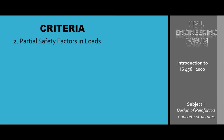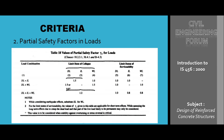Now we'll see the criteria for partial safety factor in load. As given in Indian Standard Code 456:2000, page number 68, Table 18 provides numerous values for load combinations, limit state of collapse, and limit state of serviceability, depending on dead load, live load, and impact load, from which we calculate the partial safety factor for loading conditions. That is all about the terminology of partial safety factor. Thank you for watching.